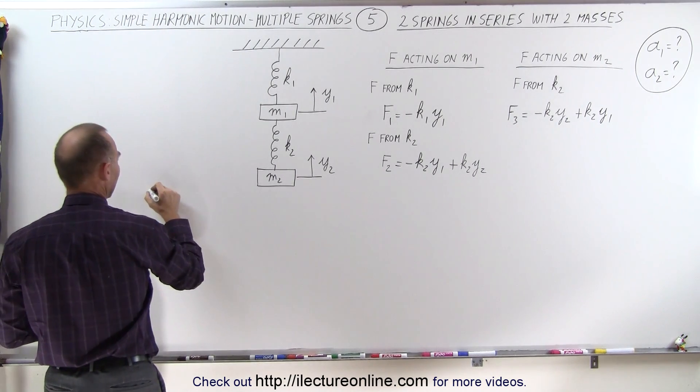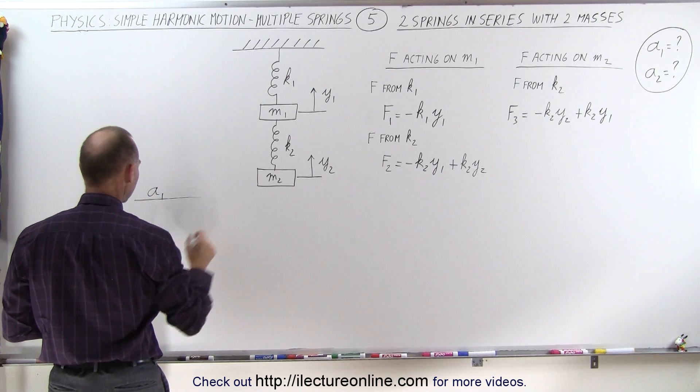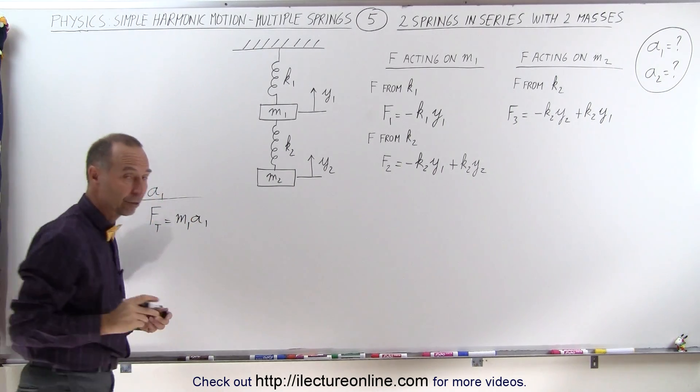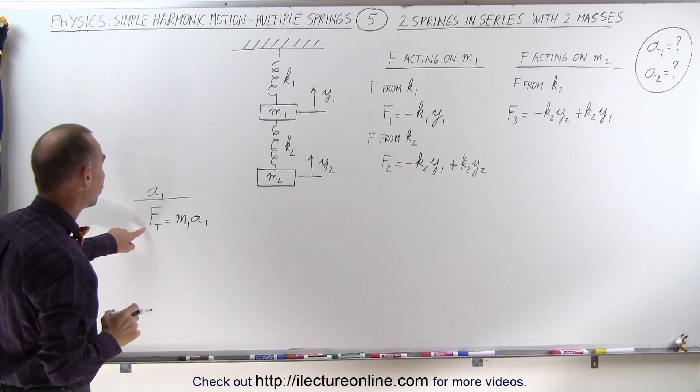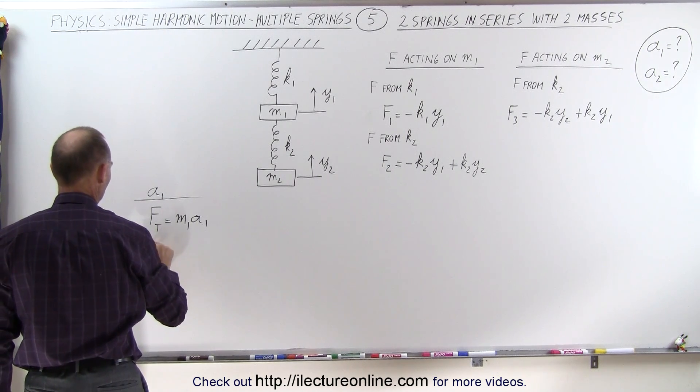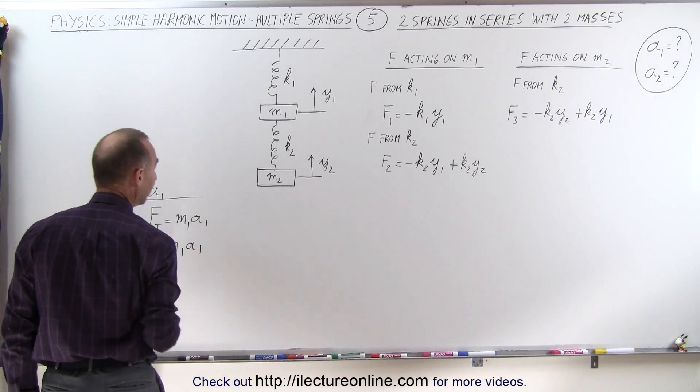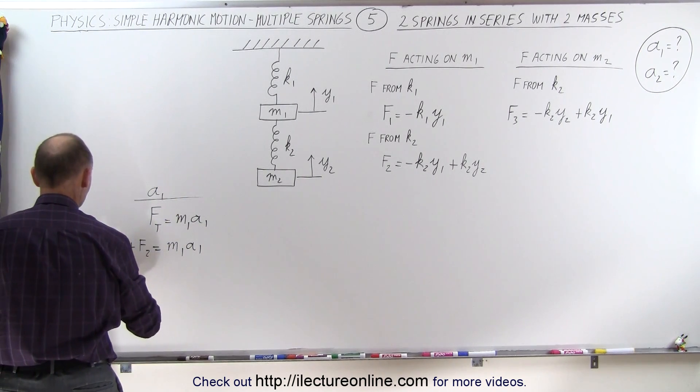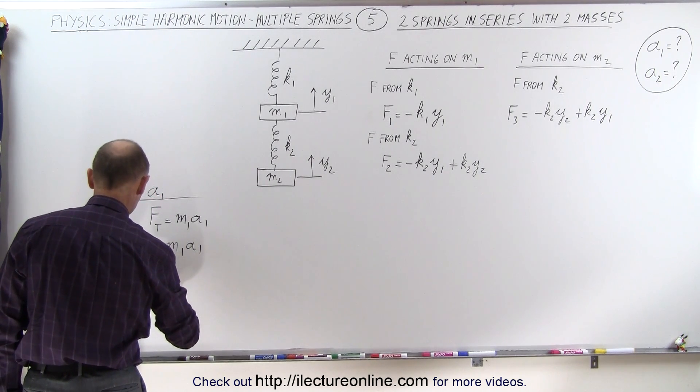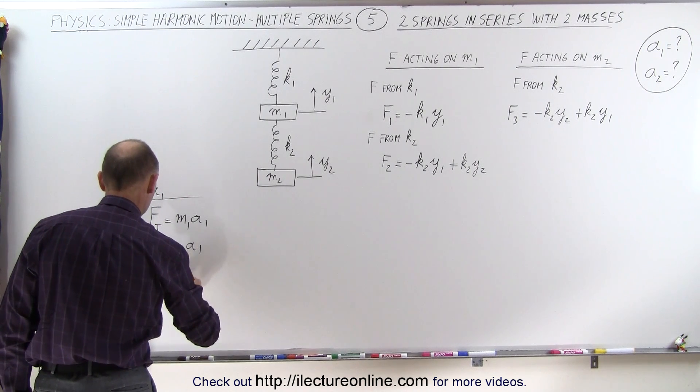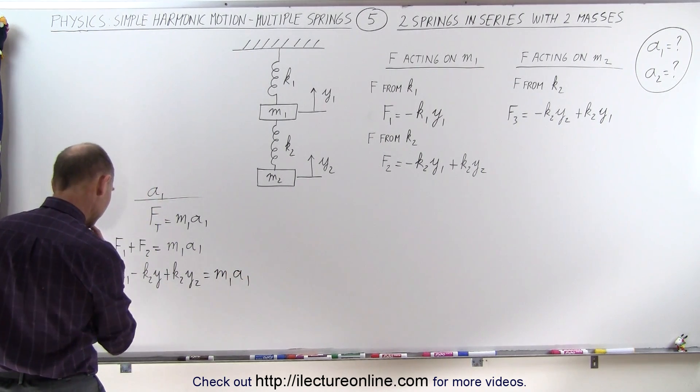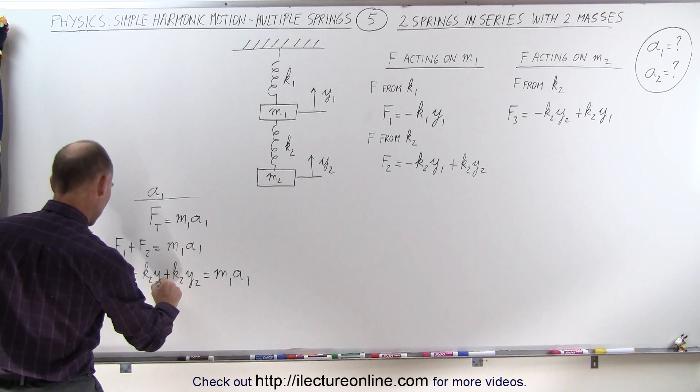So let's find the acceleration a1 on the first mass. Well, we're going to use f total is equal to m1 times a1. So we're looking for the acceleration on mass 1. And the total force is going to be the two forces f1 plus f2. So f1 plus f2 is equal to m1 times a1.